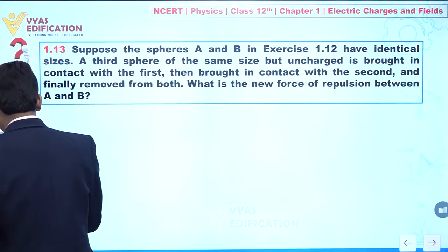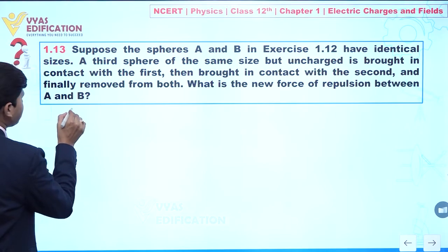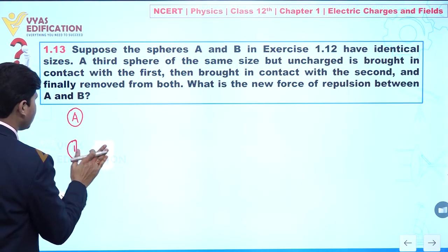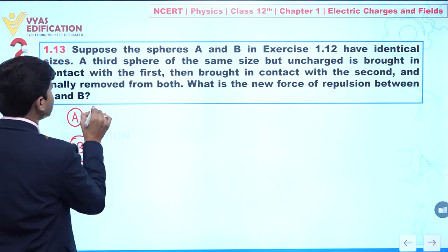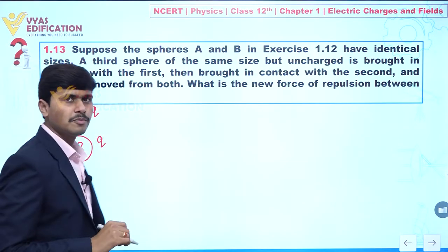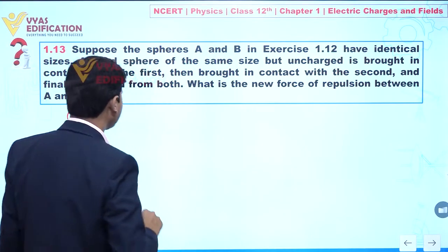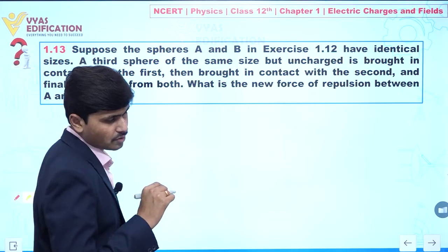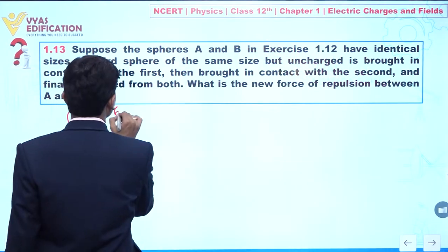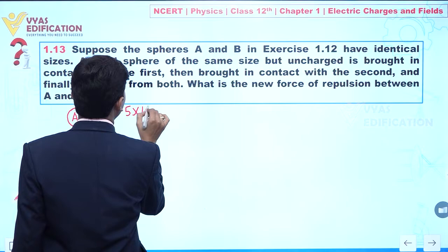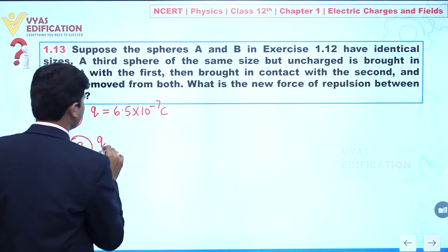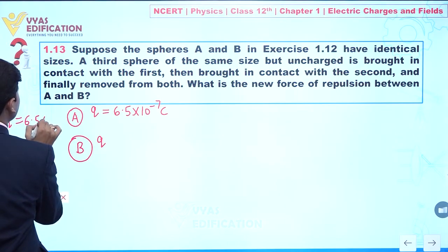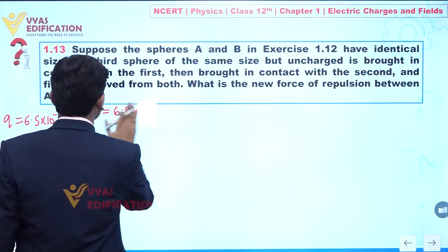Initially, let's suppose we have sphere A and sphere B, and both are having charge Q. The value of charge Q is given as 6.5×10⁻⁷ Coulomb. So I am writing here: value of Q = 6.5×10⁻⁷ Coulomb.